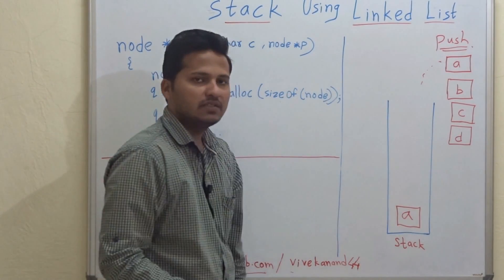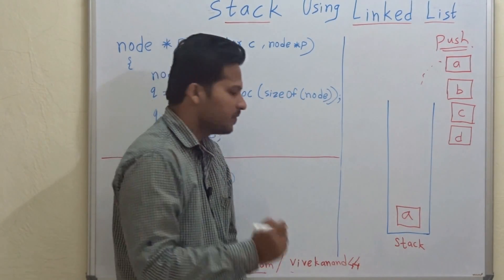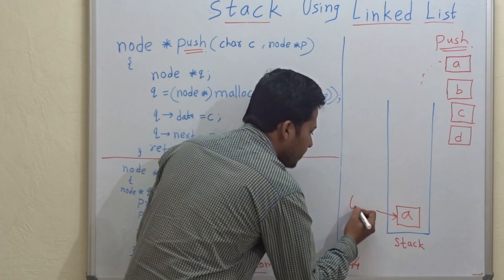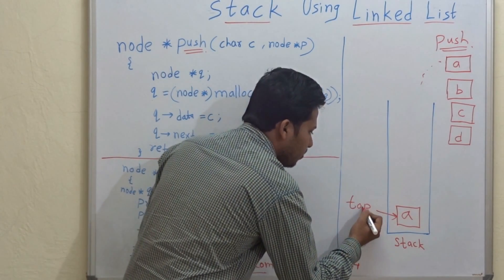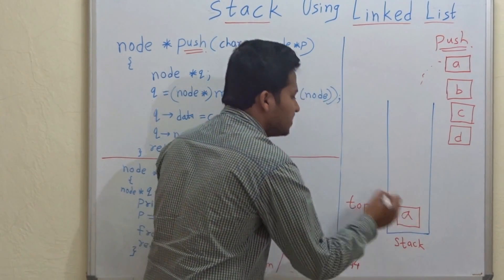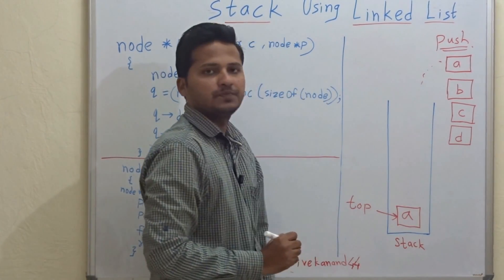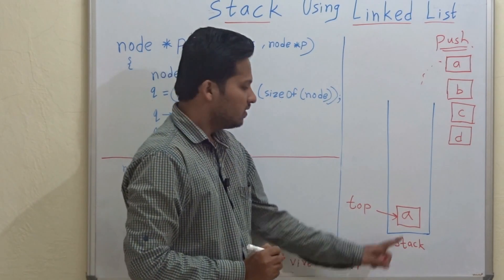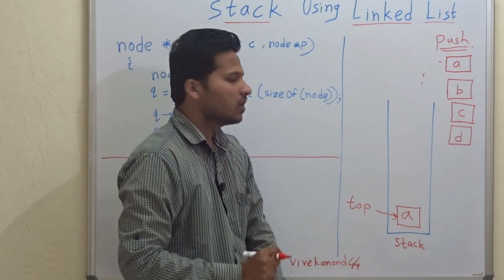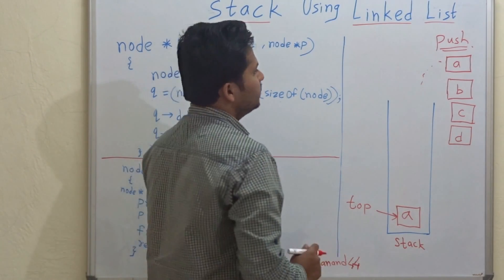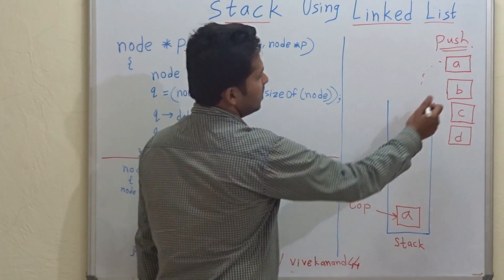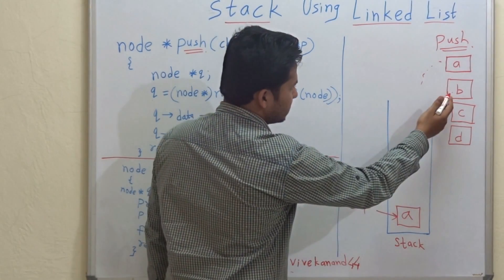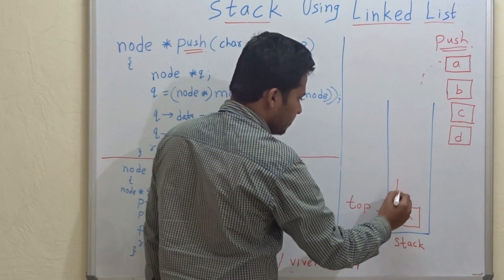Now there is one element in the stack and a pointer called the top pointer will point to this element, to this node. You can say that this is a linked list node. Now the next element is B, so let's keep this element in the stack.